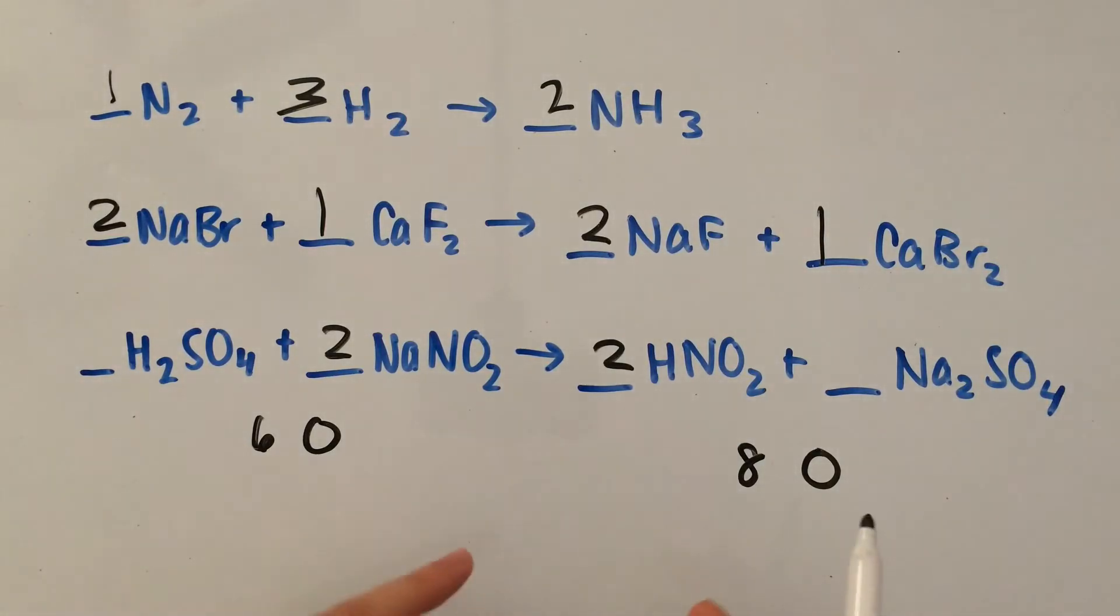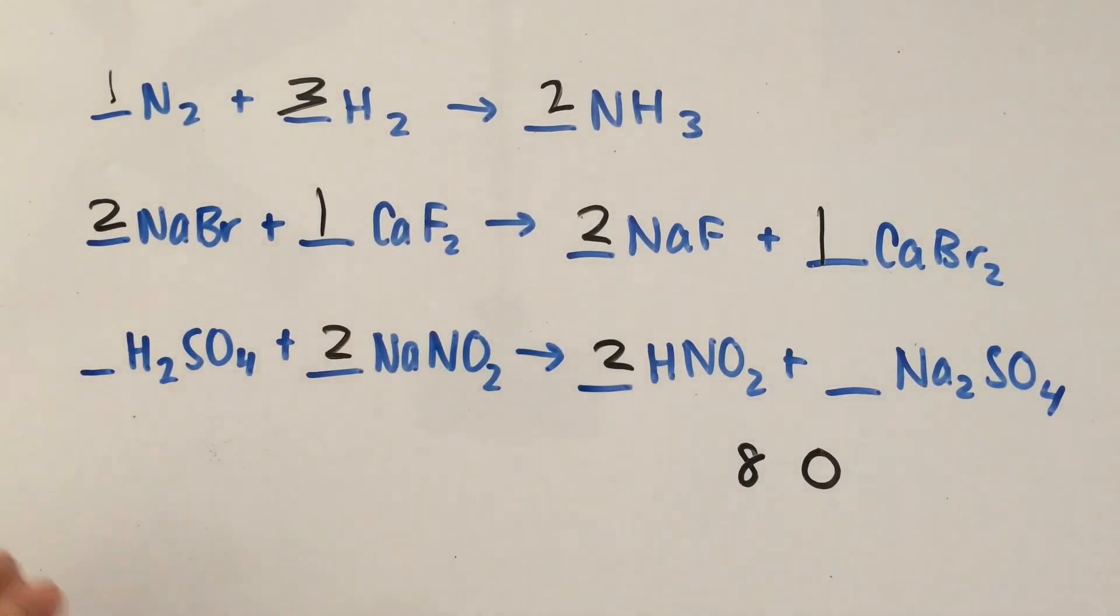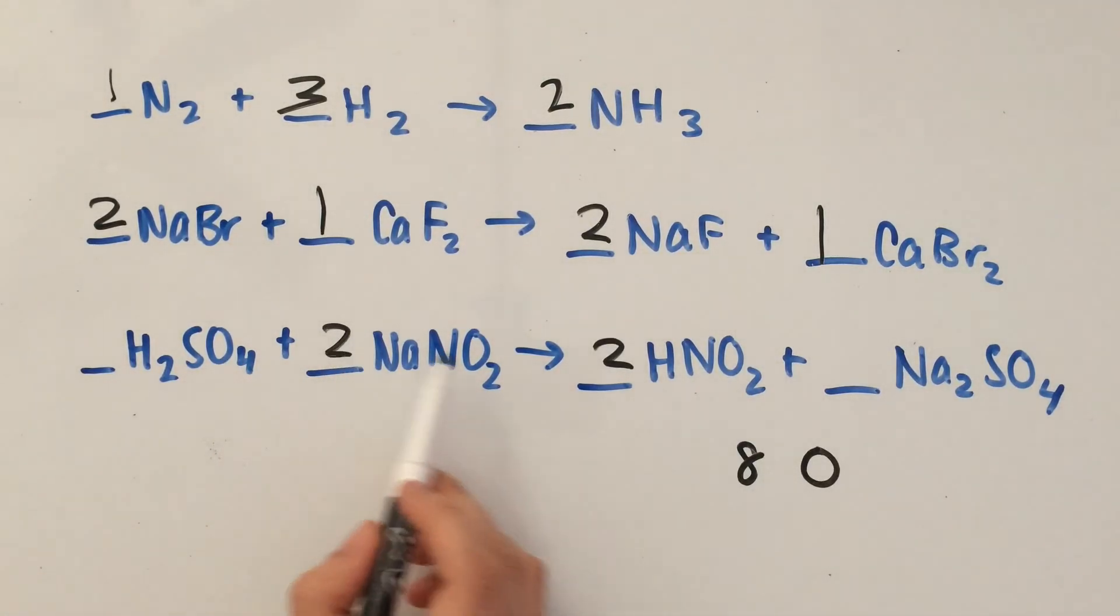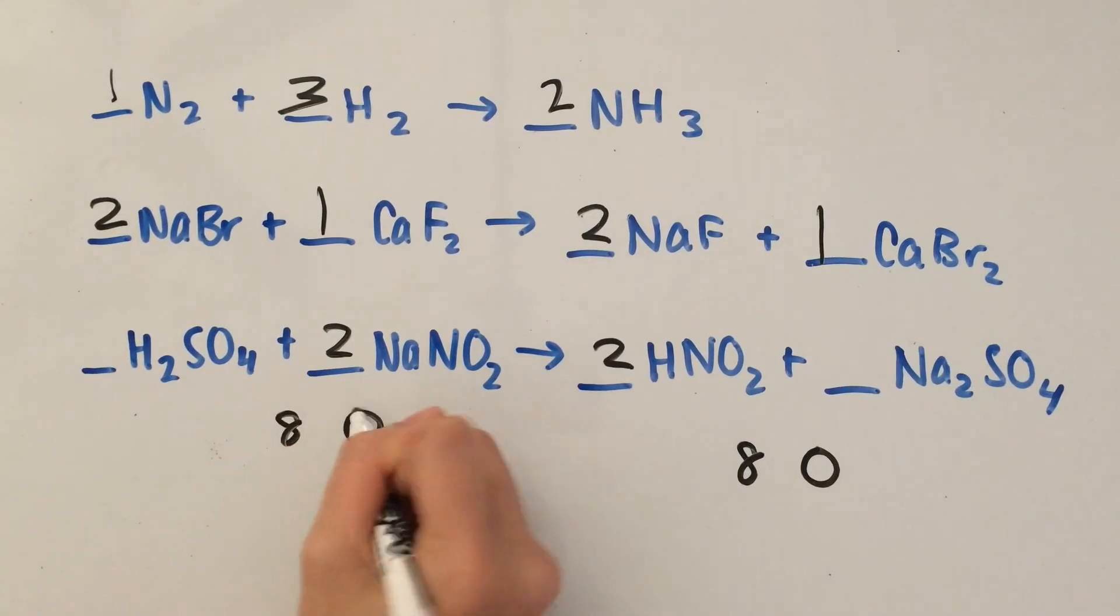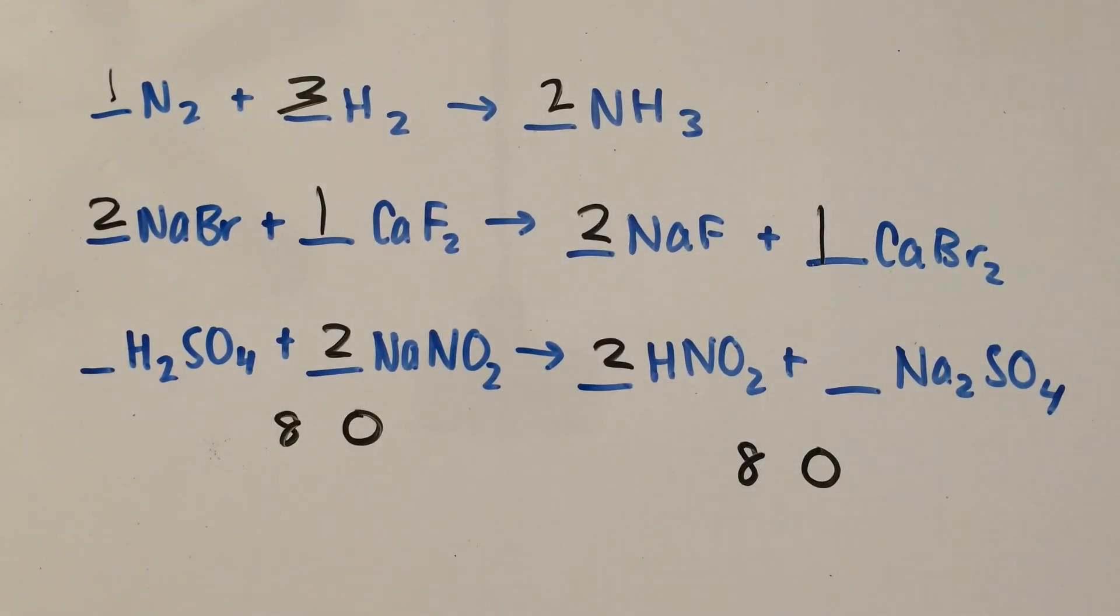Basically all of the elements are balanced out except for oxygen. Since we multiplied this whole thing by two, instead of six oxygens, we now have four plus two times two is four. So that's eight oxygens, and it looks like we're done.